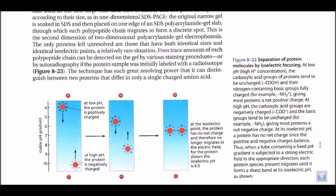Let us talk about the separation of protein molecules using isoelectric focusing. As the name suggests, this means focusing the protein molecules at their isoelectric pH. At low pH, that means at higher hydrogen ion concentration, the carboxylic acid group of a protein tends to be uncharged — it is in COH form — and their nitrogen-containing base group is fully charged, that means NH3+.